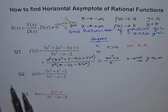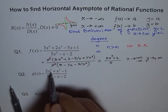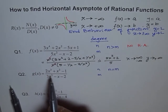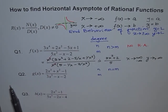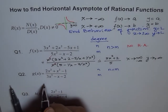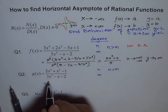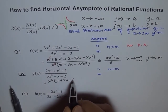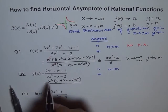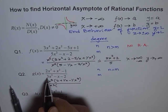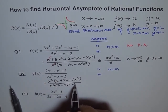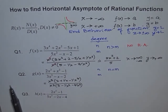Now let's take Question 2. Here the degree of the numerator n equals the degree of the denominator m — both are 3. We use the same strategy: factor out x³ from numerator and denominator. The numerator becomes x³(2 + 1/x − 1/x³) and the denominator becomes x³(3 − 1/x² − 1/x − 2/x³). Canceling x³ leaves (2 + 1/x − 1/x³)/(3 − 1/x² − 1/x − 2/x³).